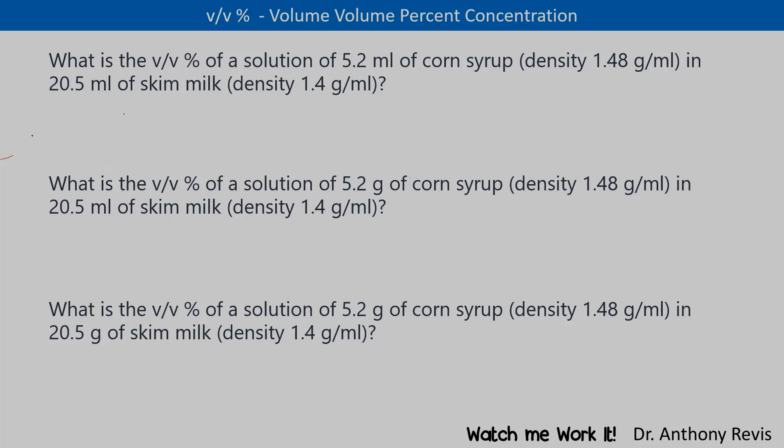Here's a problem. What is the volume-volume percent of a solution of 5.2 mils of corn syrup having a density of 1.48 gram per mil and 20.5 mils of skim milk having a density of 1.4 gram per mil?